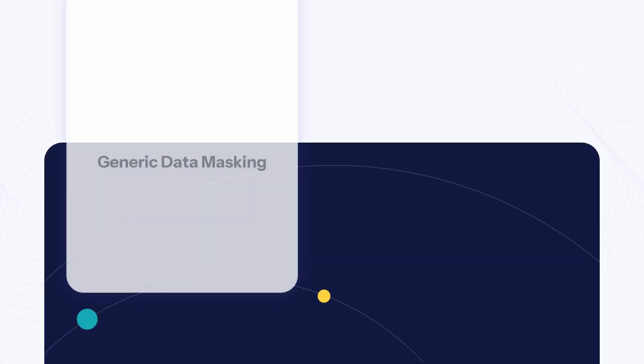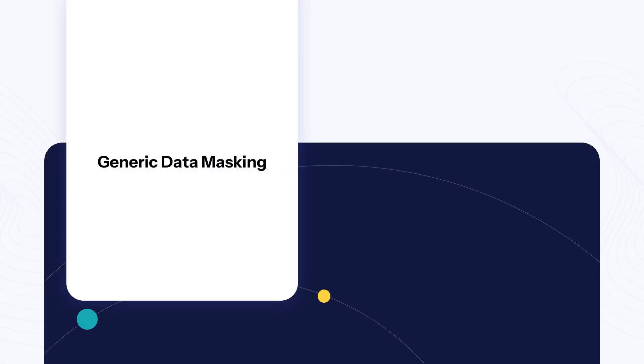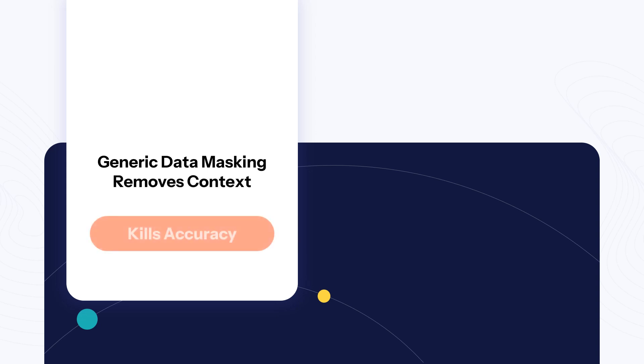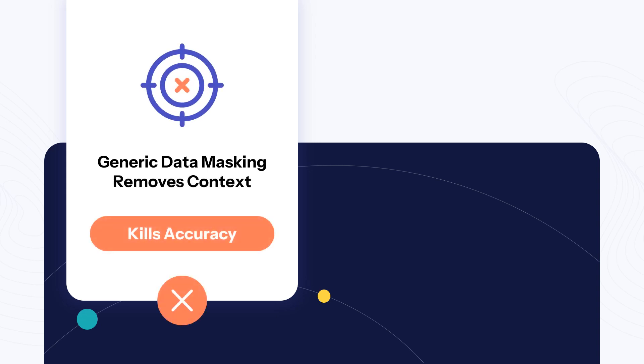Why can't you use generic data masking tools in Gen AI? Masking tools strip away crucial context, leaving the AI confused and giving inaccurate answers.